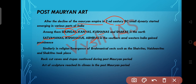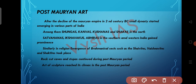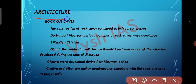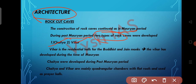Similarly, in religion, there was the emergence of Brahmanical sects — Shaivites, Vaishnavites, and Shaktites. Rock-cut caves and stupas continued during the post-Mauryan period, and the art of sculpture reached its climax. Coming to architecture, rock-cut caves continued, and during the post-Mauryan period, two types of rock caves developed — Chaitya and Vihara.